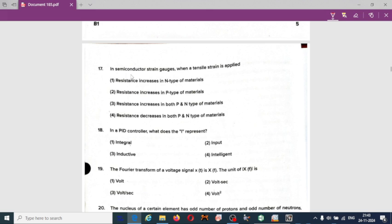Next question: in semiconductor strain gauge when a tensile strain is applied. Tensile strain means its length is going to increase, that means resistance increases as length increases. In n-type, electrons are majority carriers; p-type, holes are majority carriers. So in semiconductor strain gauge when a tensile strain is applied, resistance is maximum in case of p-type material. Option two is correct, resistance increases in p-type of materials.